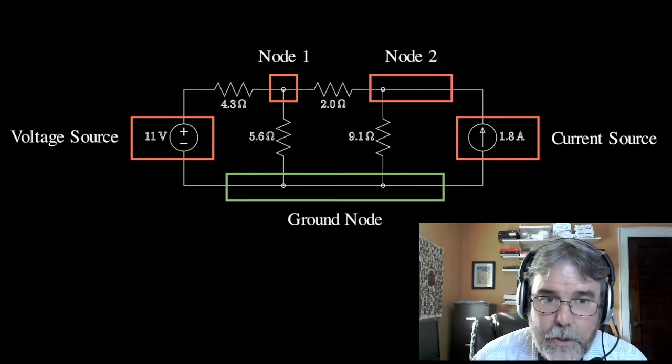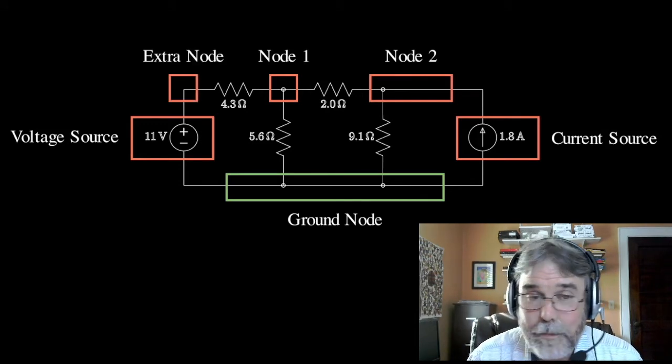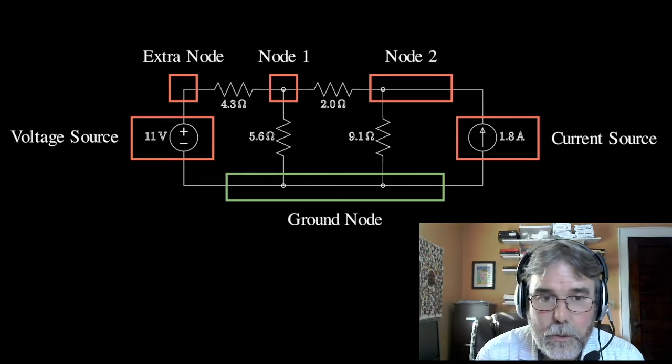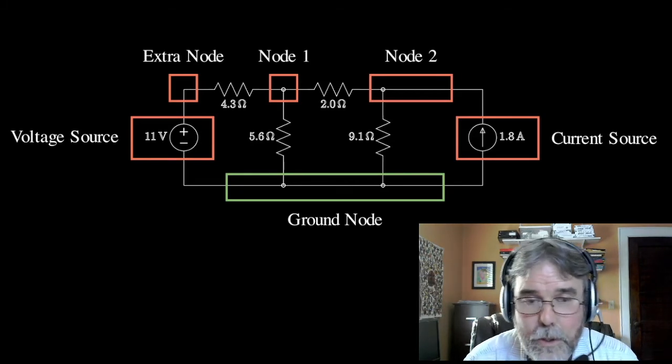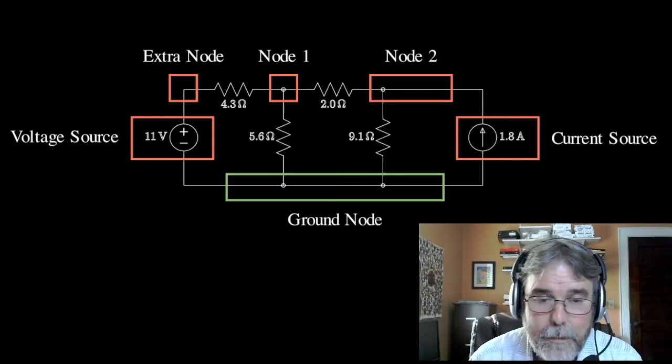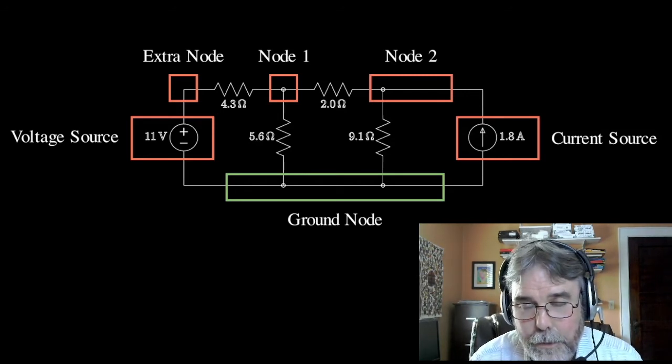There's one other node in this circuit that I'm going to call the extra node. It turns out it's not very interesting because it's connected to the ground node through a fixed voltage source. I already know its voltage, so I don't need to solve any equations. I can just tell you looking at the circuit it's got to be 11 volts. So there's only really two interesting nodes in the circuit that have unknown voltage.